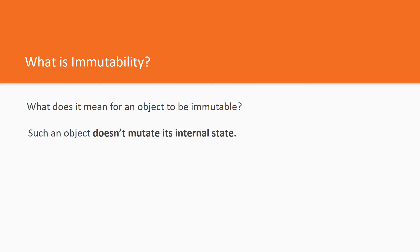Junior developers often get confused when they hear about immutability for the first time. How is it possible to implement an immutable type? However, any C# developer can recall that the string type is actually immutable. When you change a string instance, you get a new modified string instance as a result. The initial instance, the original one, stays unchanged. This is immutability in essence.